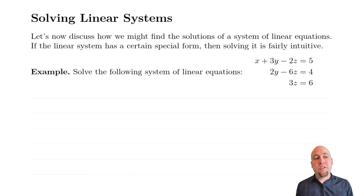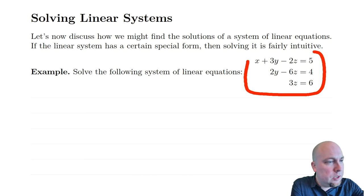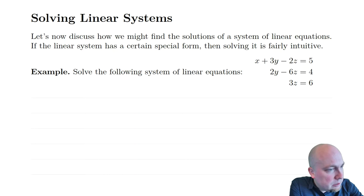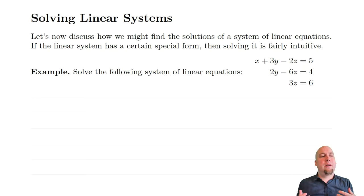To start off, I'm going to notice that linear systems are really easy to solve if they have a certain special form — if they're sort of triangular. So take this example over here. If your linear system has this form where the coefficients of some of the variables are zero in this lower triangular piece, then you can solve it very easily via a method called back substitution.